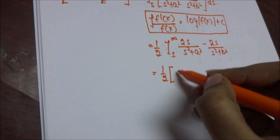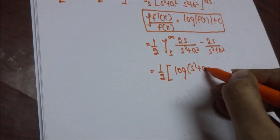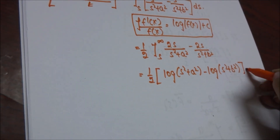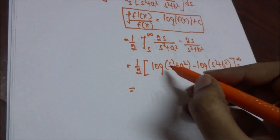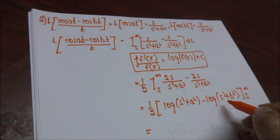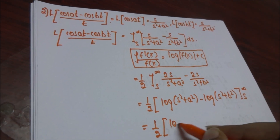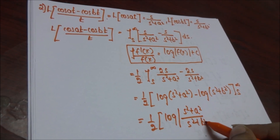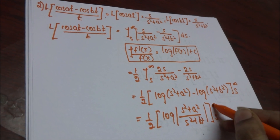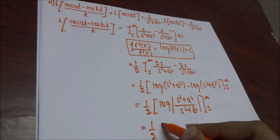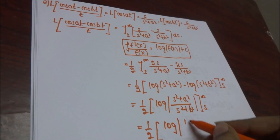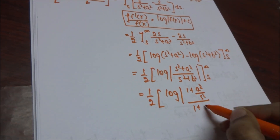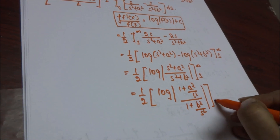This gives (1/2) times [log(s² + a²) minus log(s² + b²)] evaluated from s to infinity. Using the logarithm property log(A) minus log(B) equals log(A/B), this becomes (1/2) log[(s² + a²)/(s² + b²)] from s to infinity. Factoring out s², this equals (1/2) log[(1 + a²/s²)/(1 + b²/s²)] evaluated from s to infinity.